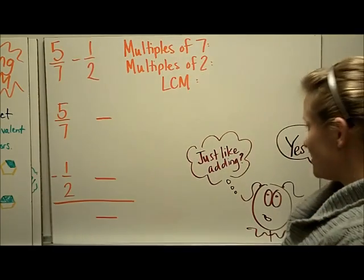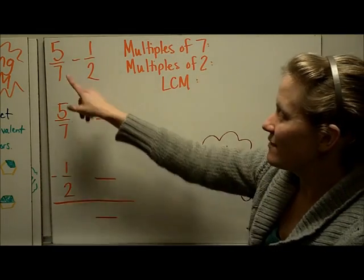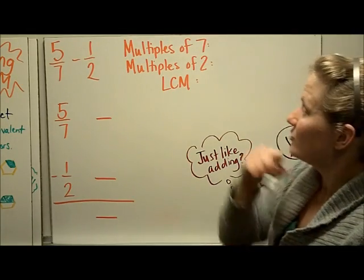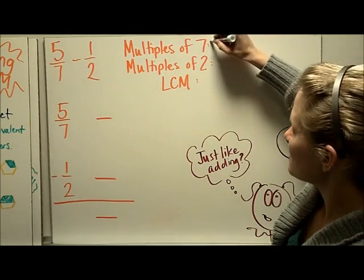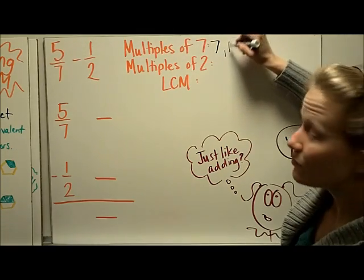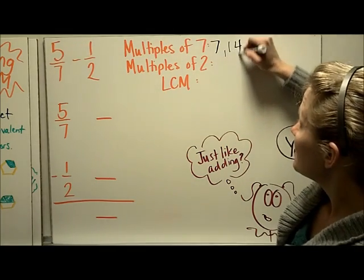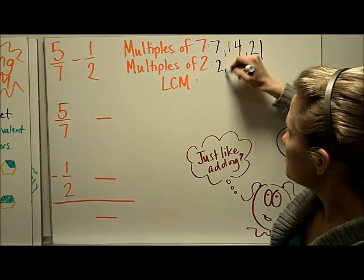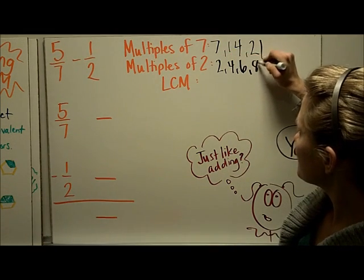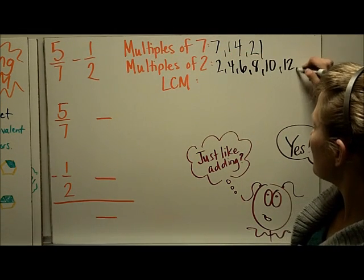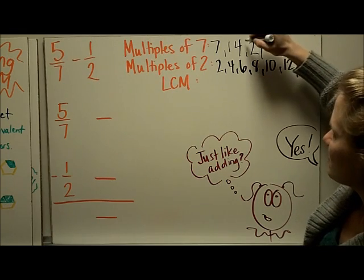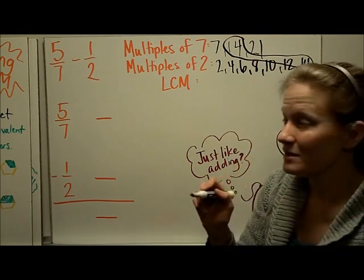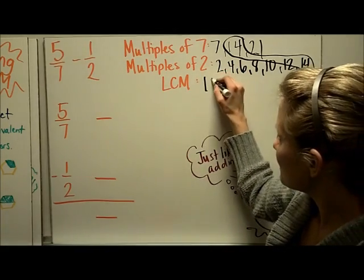Let's try these same steps with subtraction: five-sevenths minus one-half. I'll find the multiples of seven and the multiples of two. Seven, fourteen, twenty-one. Two, four, six, eight, ten, twelve, fourteen. A common multiple is fourteen, so the least common multiple of seven and two is fourteen.